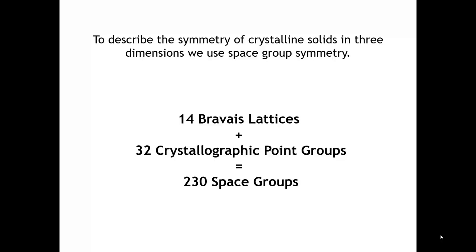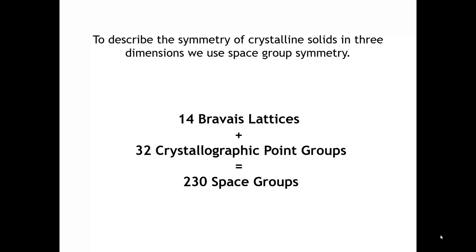In a very analogous manner to plane group symmetry, we're going to get space group symmetry by combining the translational symmetry of a Bravais lattice with the point symmetry operations of a point group. The difference is that once we go to three dimensions, we have more Bravais lattices and more point groups. There are 14 Bravais lattices in three dimensions and 32 crystallographic point groups, and when we combine those, we end up with a total of 230 space groups that can be used to describe three-dimensional crystals.